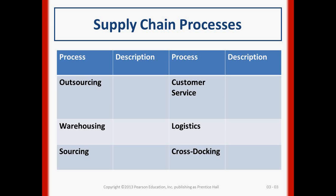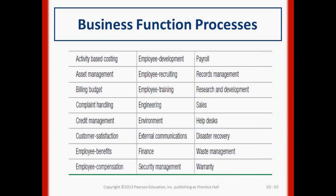Logistics involves the process of getting not only the physical product to the customer but also the information that goes along with it and the cash transactions. Cross docking is a process where you bring products in on one end, the product doesn't get stored for long — it's staged in a warehouse and then shipped to the customer right away.